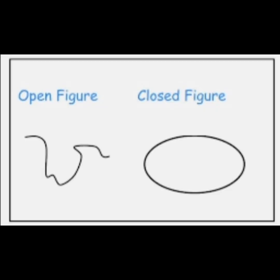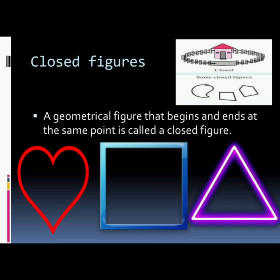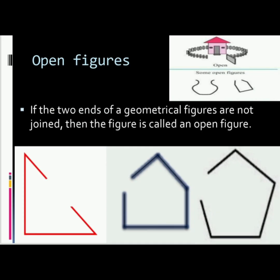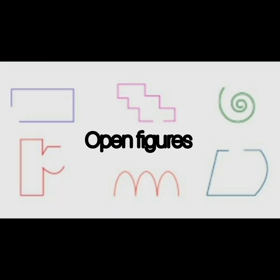Let's learn about closed figures and open figures. A geometrical figure that begins and ends at the same point is called a closed figure. These are some of the closed figures. If the two ends of a geometrical figure are not joined, then the figure is called an open figure. These are some of the open figures.